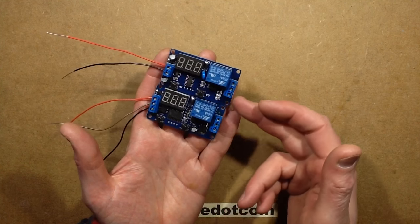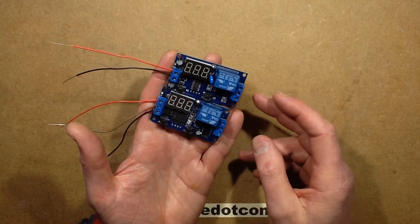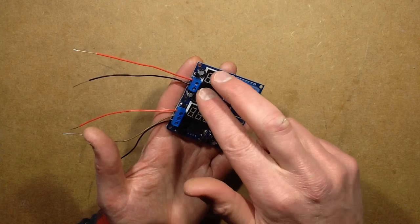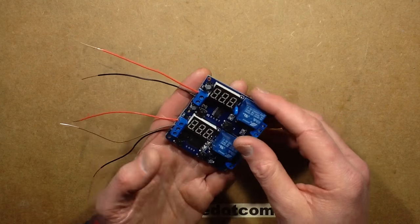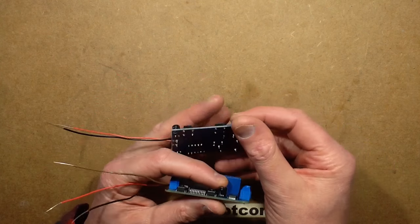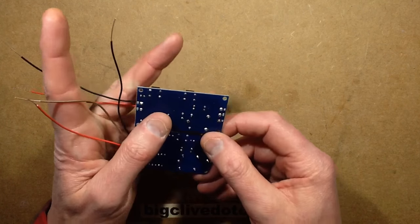Although they share the same sort of output contact arrangement from the relay, this one has three input terminals and this one's got two input terminals just for power. And when you look at the back, you suddenly realize that...